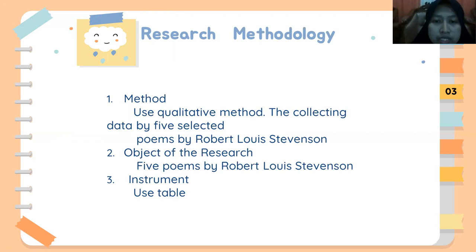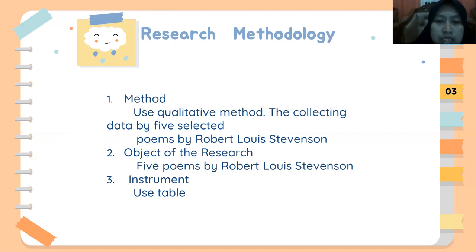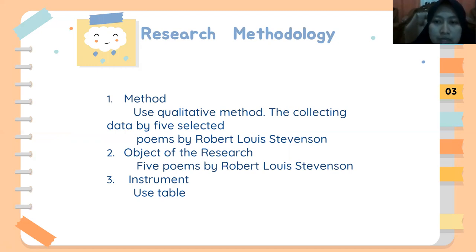The next part is research methodology. In this research, the researcher used descriptive qualitative methods. The researcher described and observed phenomena in the form of words, sentences, prose, or clauses. The researcher used this method to investigate the anaphora in poems. The objects of the research were five selected poems by Robert Louis Stevenson: The Moon, The Swing, The Bed in Summer, From a Railway Carriage, and The Land of Mood.